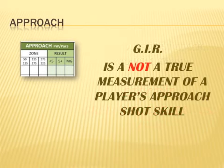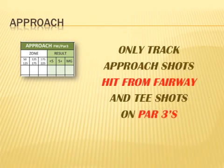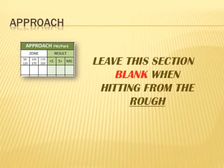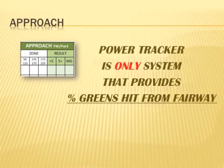But GIR is not a true measurement of a player's approach shot skill. If you had a poor tee shot in the rough and missed the green with your next shot, you would never know if you missed the green because of a bad lie or because of a poor swing. Power Tracker only tracks approach shots hit from the fairway or tee shots on par threes, leaving this section blank when hitting from the rough. It is the only system that provides percent greens hit from the fairway, which is a much better statistic to identify the strengths and weaknesses of your approach swing fundamentals.